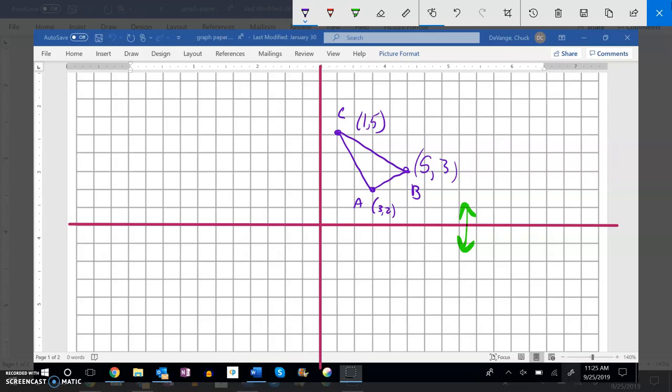Notice it doesn't move left or right at all, so the x values stay the same. Like this is at 1, 5. What's going to happen is this distance that it is from the line that it's reflecting across is going to get mirrored down. 1, 2, 3, 4, 5.